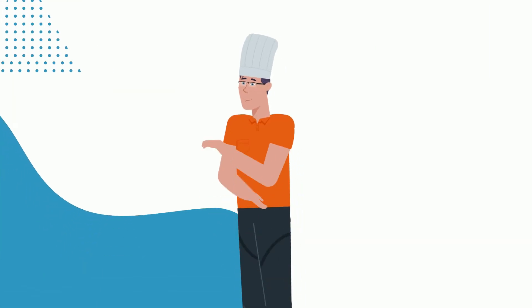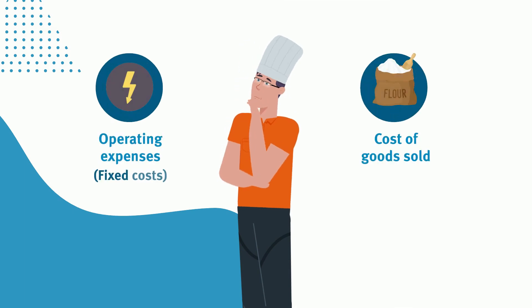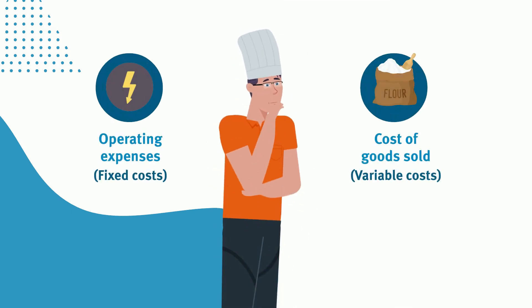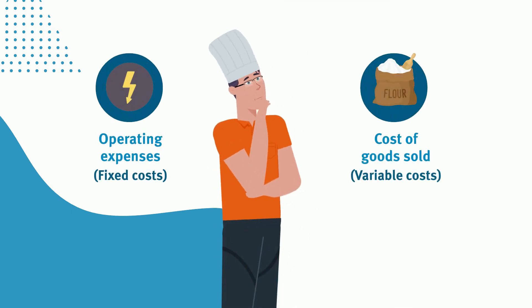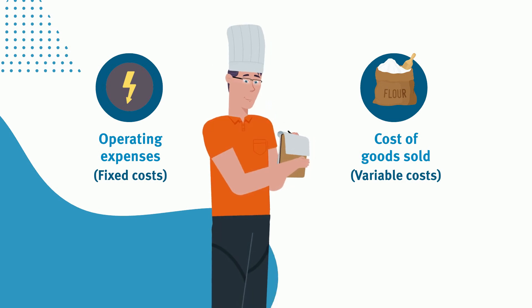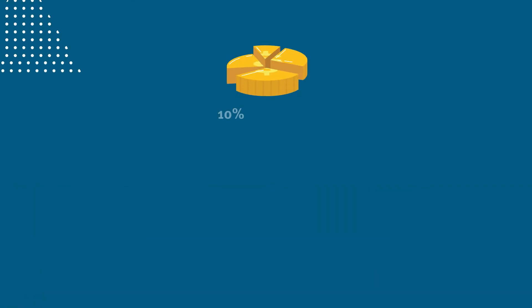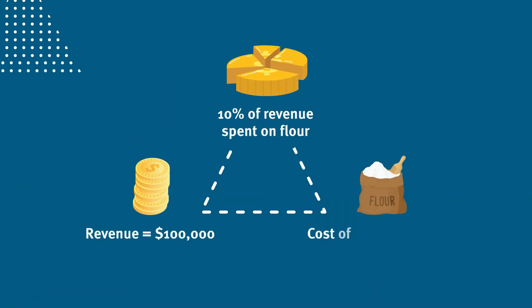You should also reduce your expenses by looking at your fixed and variable costs — also known as operating expenses and costs of goods sold — and finding ways to reduce these. It can help to calculate the percentage of revenue you spend on each of your expenses.